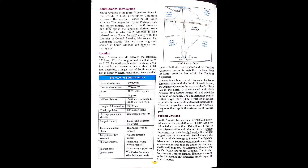Now the political division of South America. South America has an area of 1,78,40,000 square kilometres. Its population as of 2016 has been estimated at more than 420 million. It has 12 sovereign countries and other territories. Brazil is the largest country in South America and the fifth largest country in the world. French Guiana is a territory which belongs to France. The Falkland Islands, South Georgia Island and other non-sovereign areas are under the control of the United Kingdom.